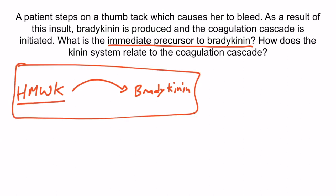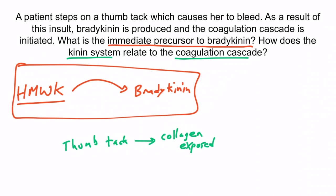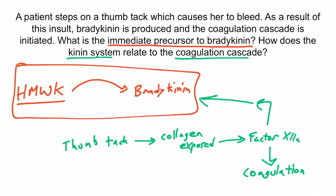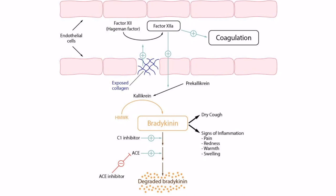Now let's answer the second part: how does the kinin system relate to the coagulation cascade? Taking this patient as an example, stepping on a thumbtack damaged the endothelial wall, exposing interstitial collagen to the bloodstream, leading to the formation of activated factor XII — factor XIIa. Factor XIIa starts the coagulation cascade and also upregulates the conversion of prekallikrein to kallikrein, which then acts to upregulate high molecular weight kininogen to bradykinin. So it is through factor XII that the kinin system intersects with coagulation. That concludes this section.